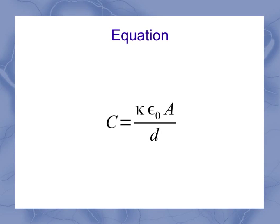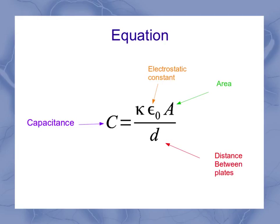Now the equation here has got our capacitance. And it's related to this kappa epsilon naught A over d, where A is our plate area, d is our distance between the plates, epsilon naught is our electrostatic constant, and kappa is our dielectric constant.